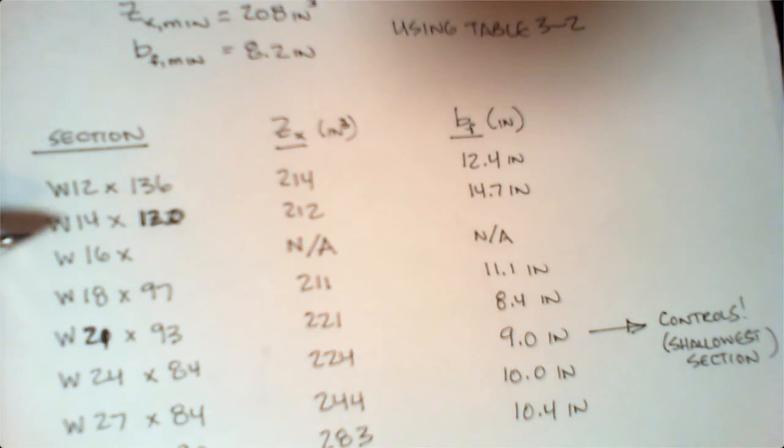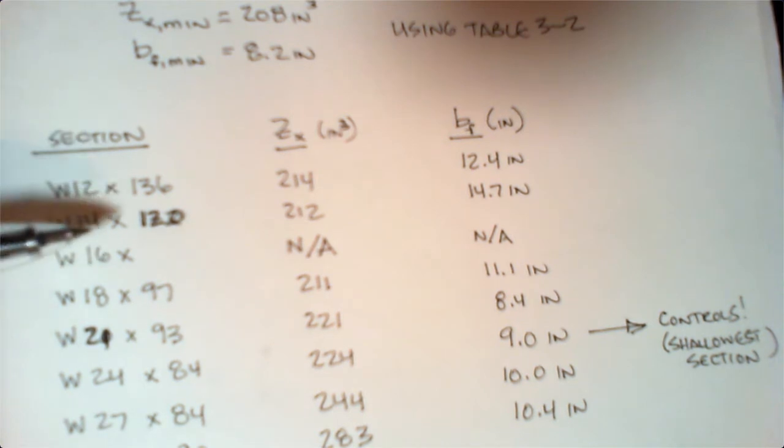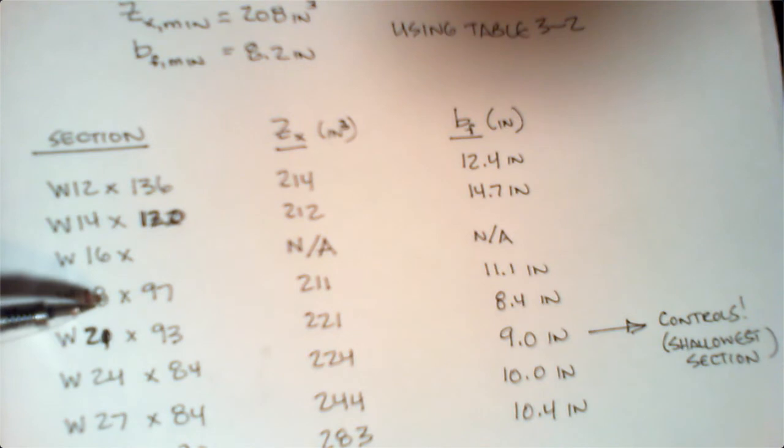These are the lightest guys from each of the major depth categories. I have a W12 by 136, a 14 by 120. There actually isn't a 16 because the largest W16 shape is only a 16 by 100, so these guys aren't usually your best choices for beams unless you're very lightly loaded.